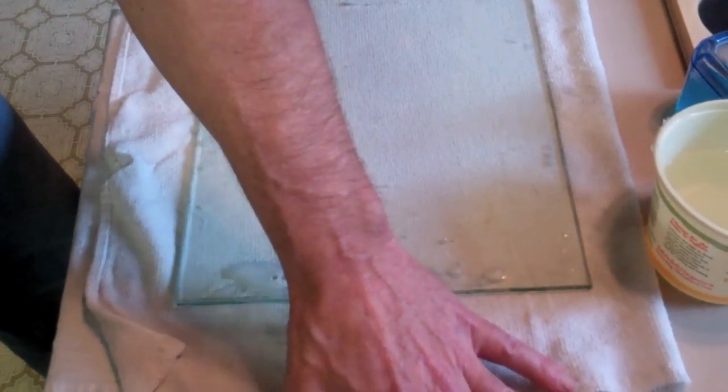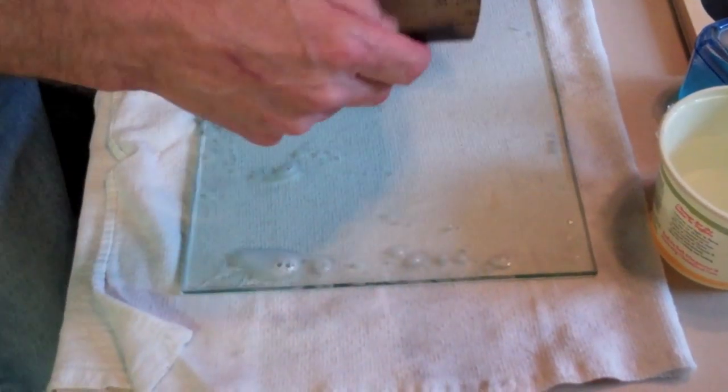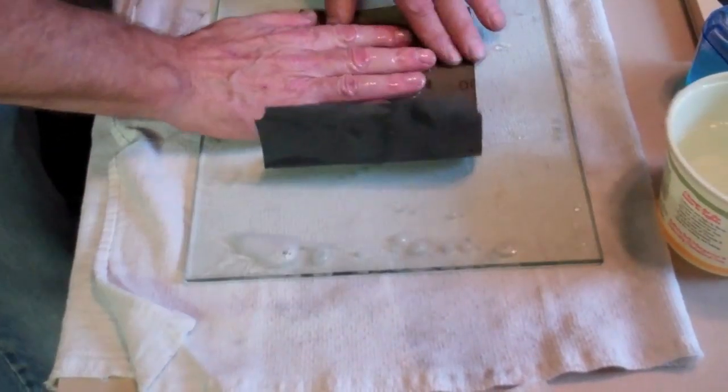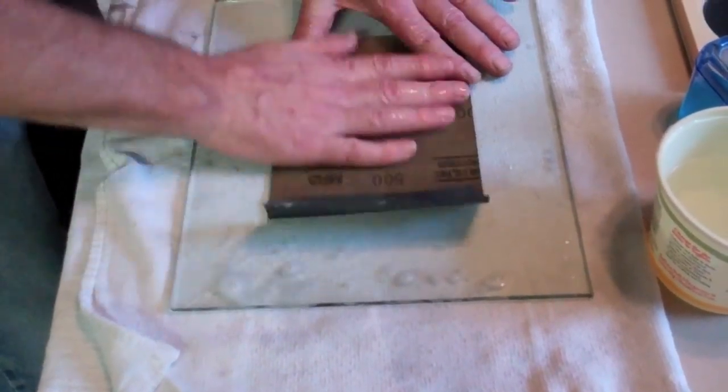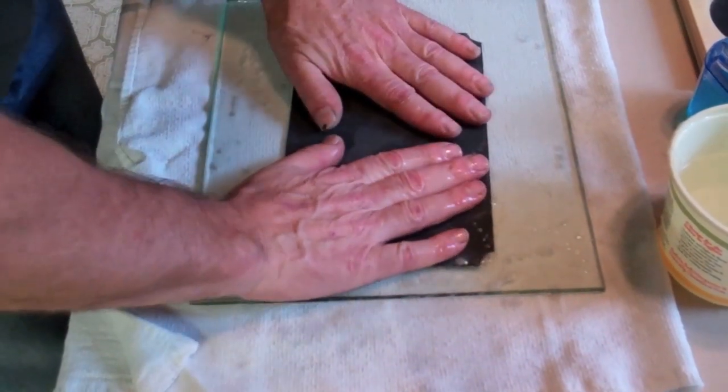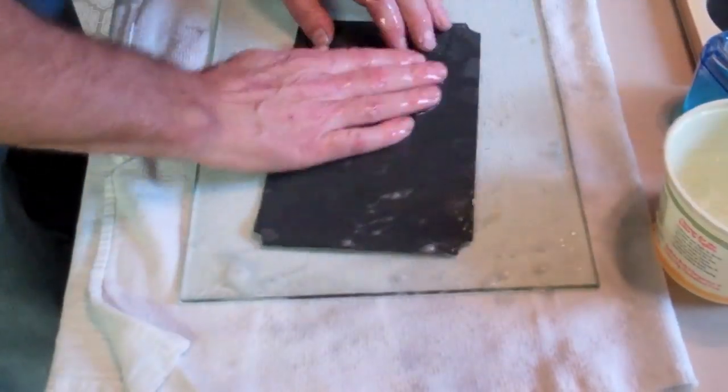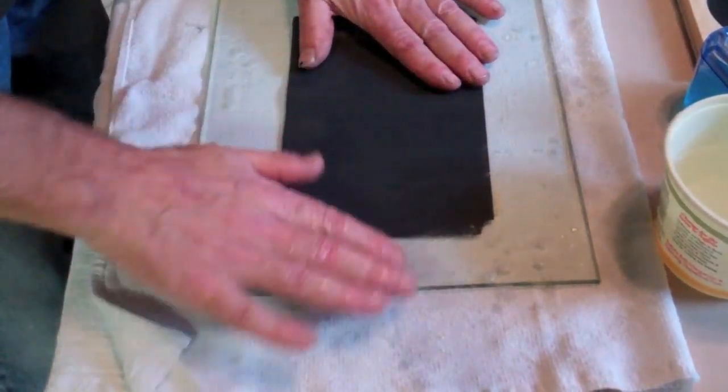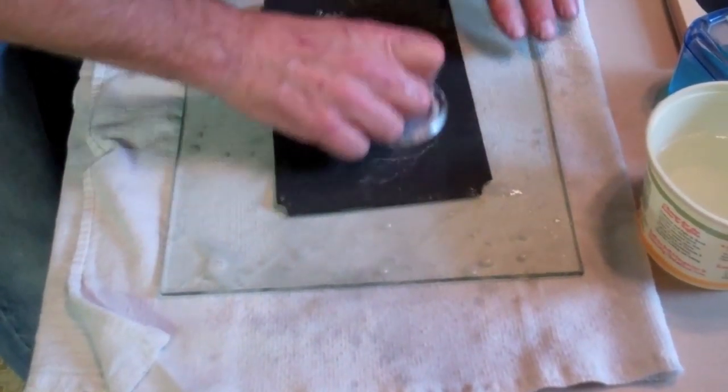I'm going to kind of rinse this off a little bit. Then you're going to take the 500 grit. Now I bought some sheets that were different, they're not full size sheets. That's what I had. And you wet the back of that so it sticks to the glass. Then you wet the face of that and you put some soap on it.